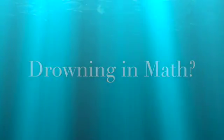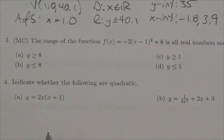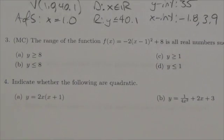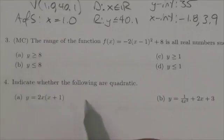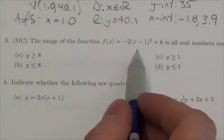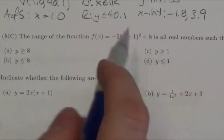Alright everybody, we're working through the quadratic functions and equations review, looking at question 3. It's multiple choice. The question asks: the range of the function f(x) = -2(x - 1)² + 8 is all real numbers such that...